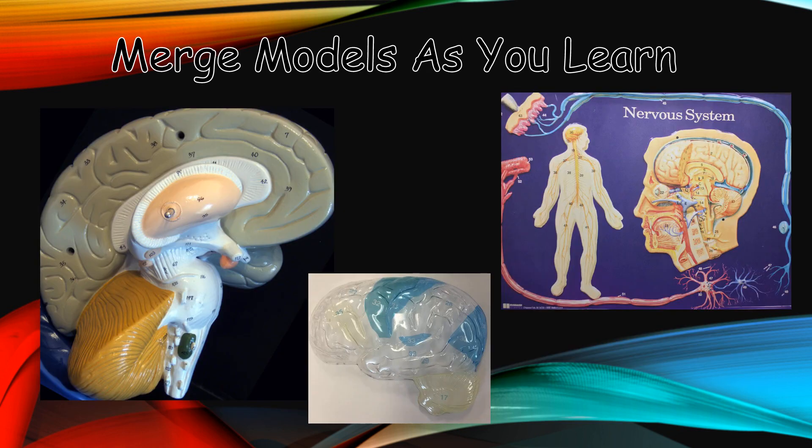Another example of merging models together would be the purple nervous model along with its CAP and the 3D brain. You can compare lobes of the brain and also compare the inner workings. You will see that some structures have the same names and are located on both models. You can also identify different functions and compare and contrast what's listed.